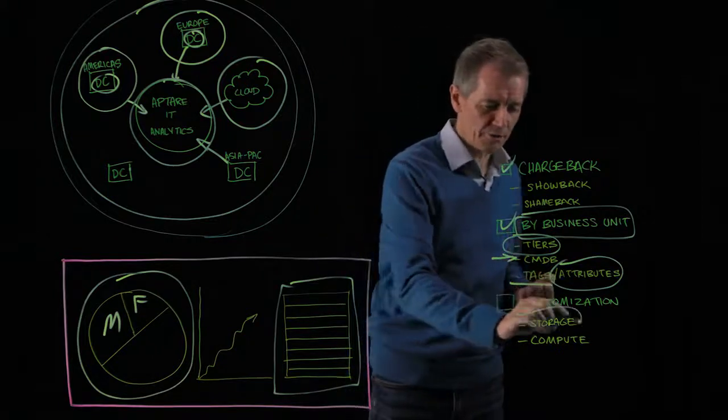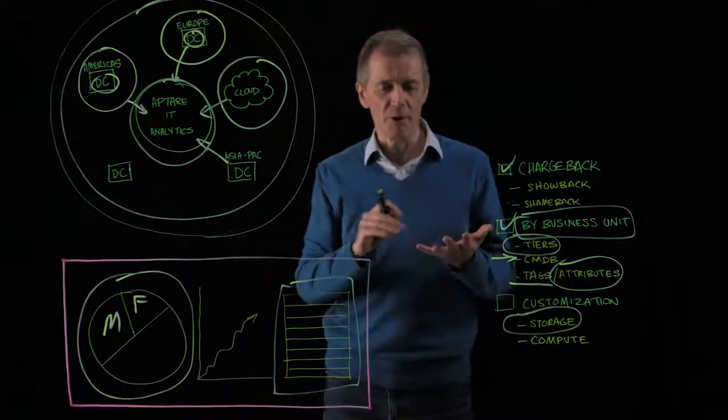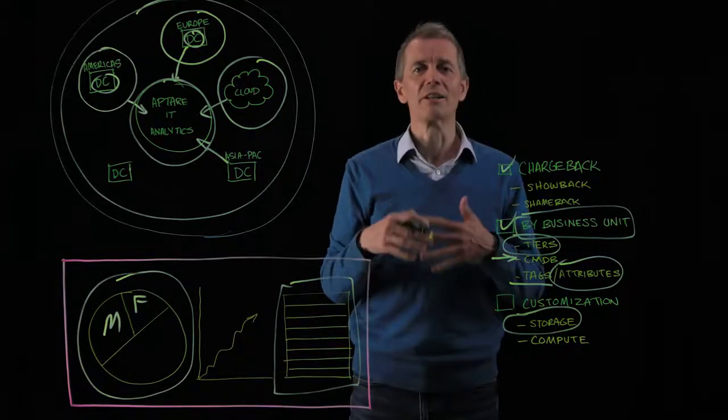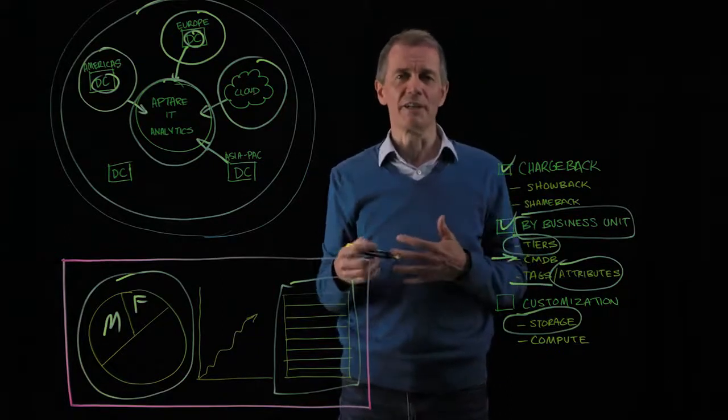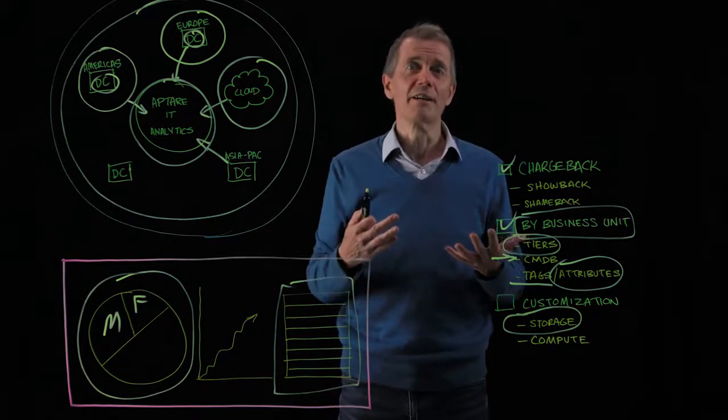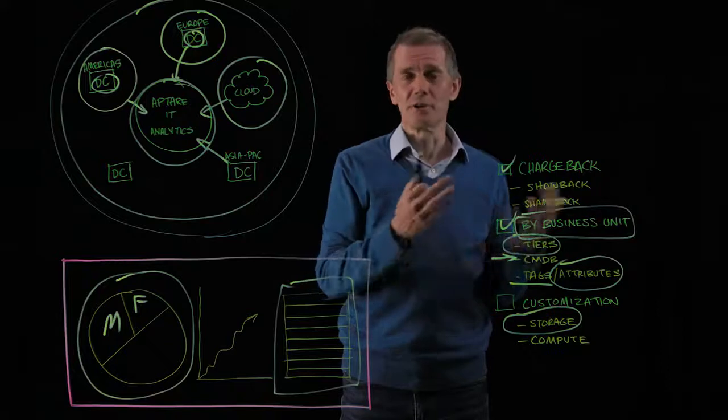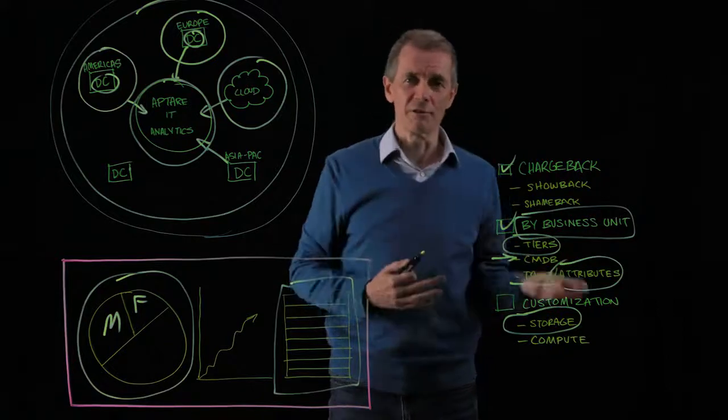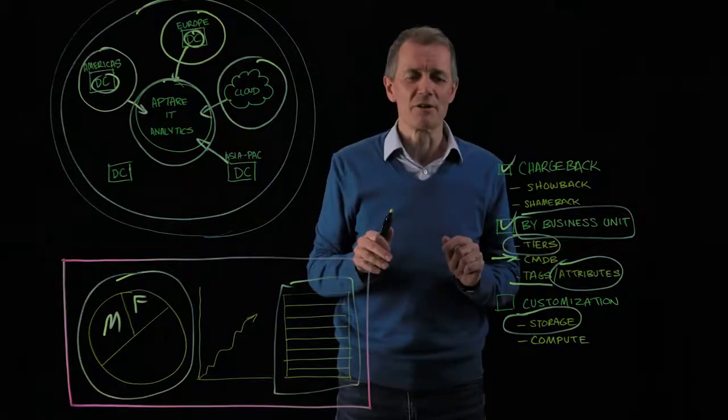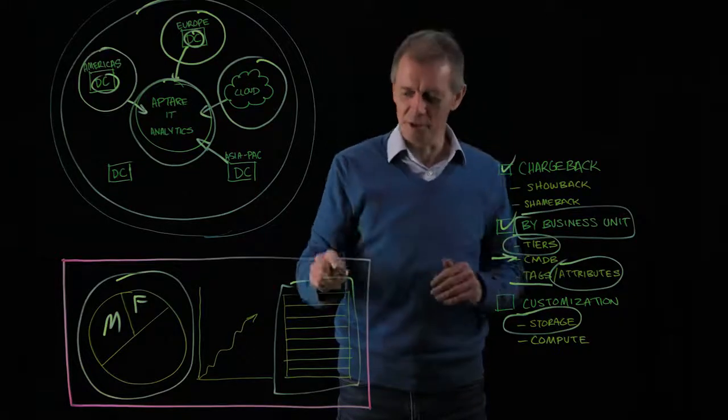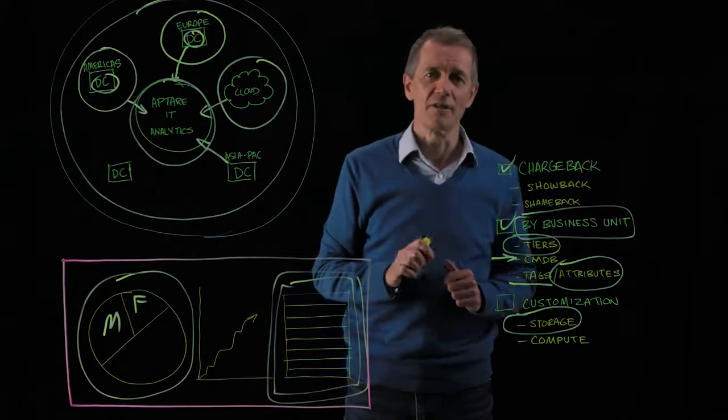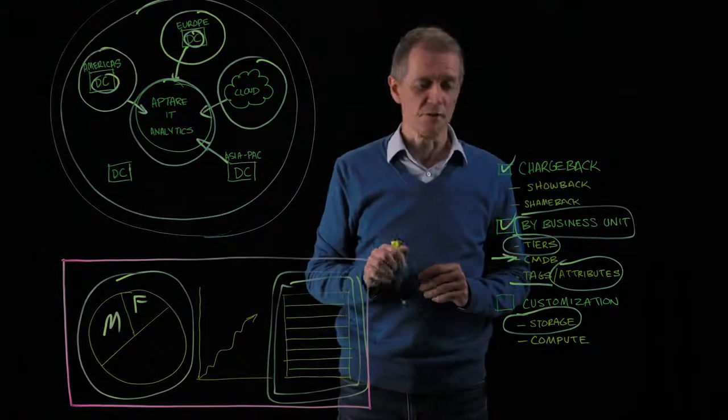When we're looking at storage, for example, we talked about tiering. What is tier one storage? What's tier two storage? We allow you to define the tiers. We allow you to define the cost for those tiers. We allow you to define cost per storage array vendor or type or speed of drive, etc. All that is exposed. And you can actually type in the numbers, run it through our engine, and you can get a report by business unit of the actual dollar cost for the resources that are being consumed.